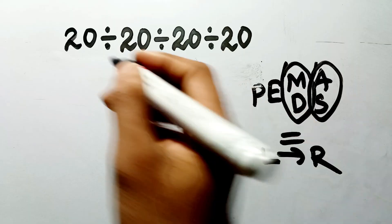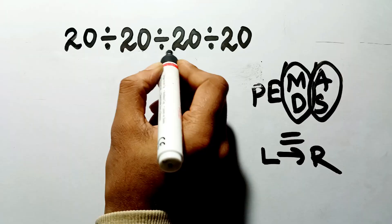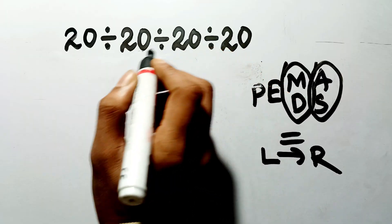Okay, so, according to PEMDAS, first we have to do the first division on the far left, then the next one, and finally, the last one.